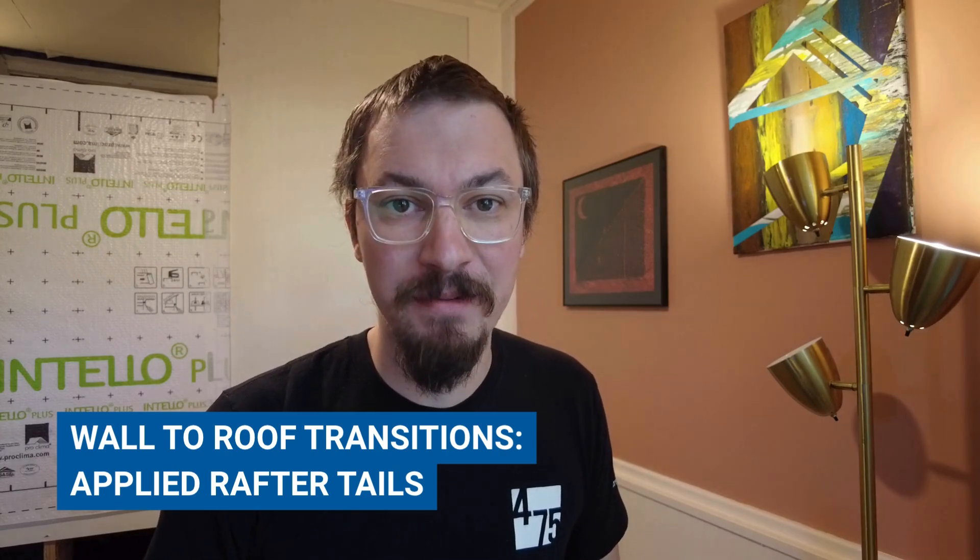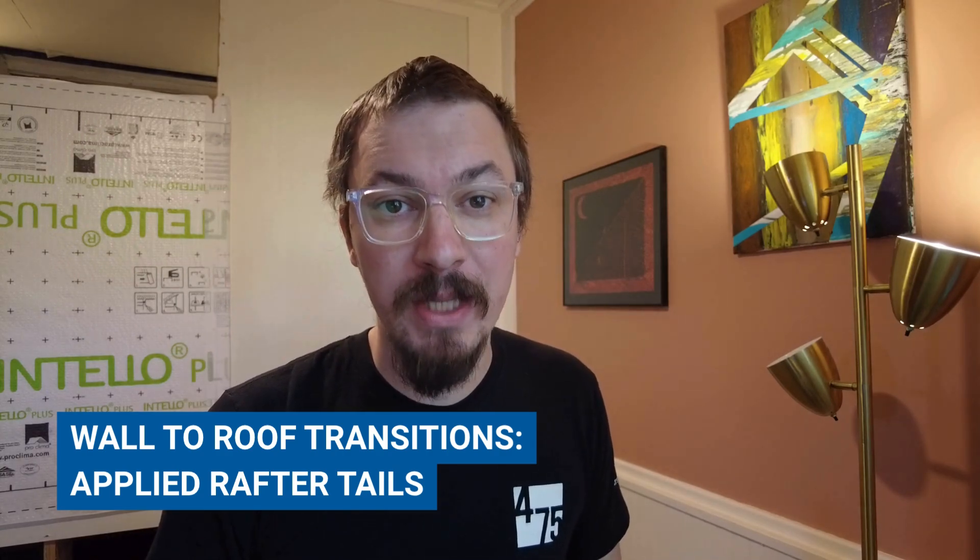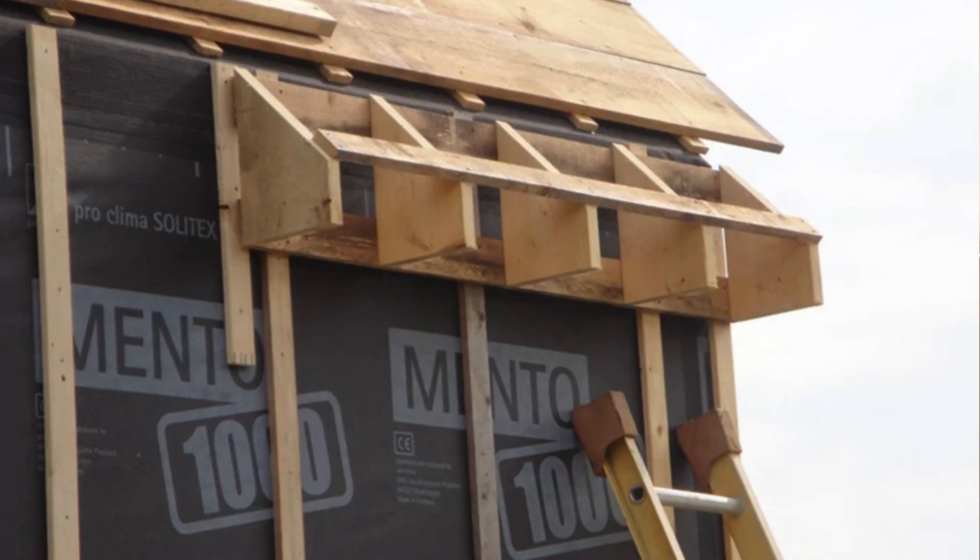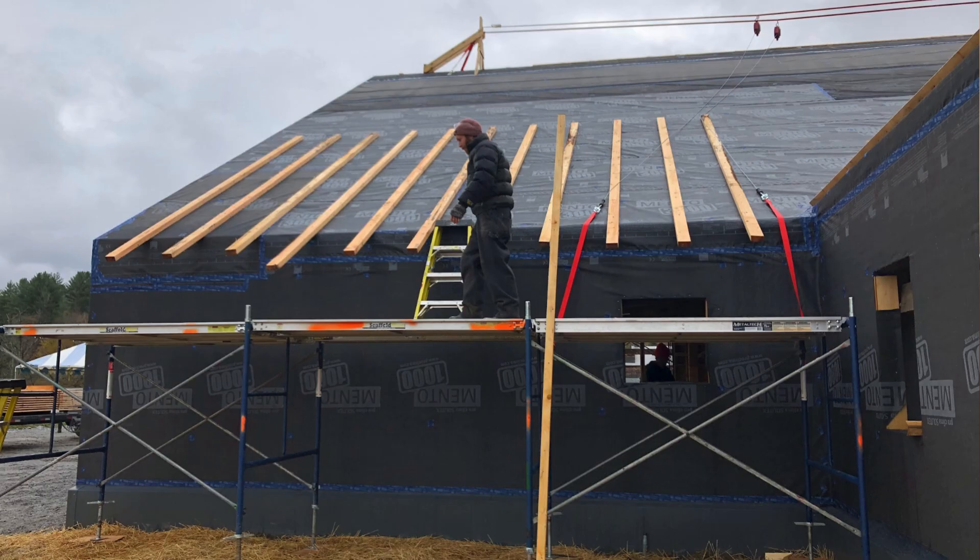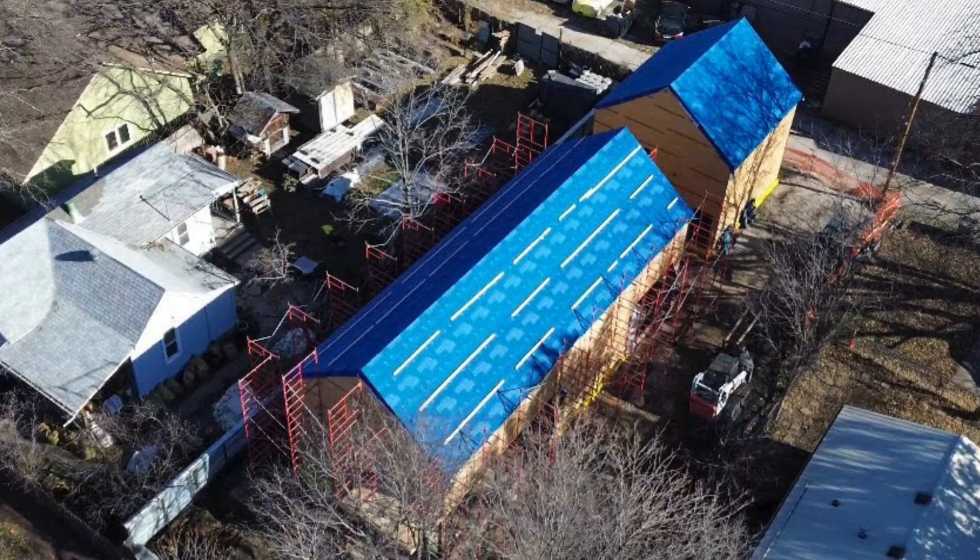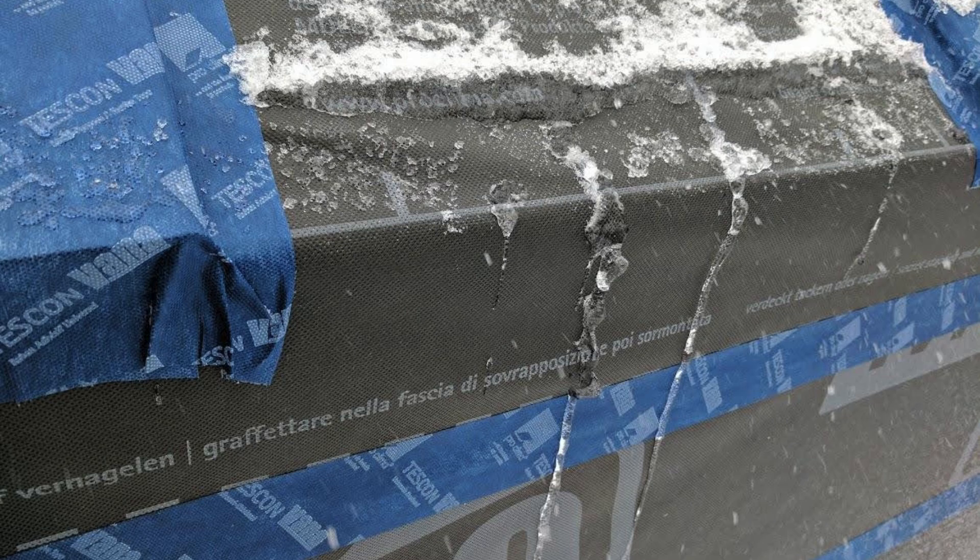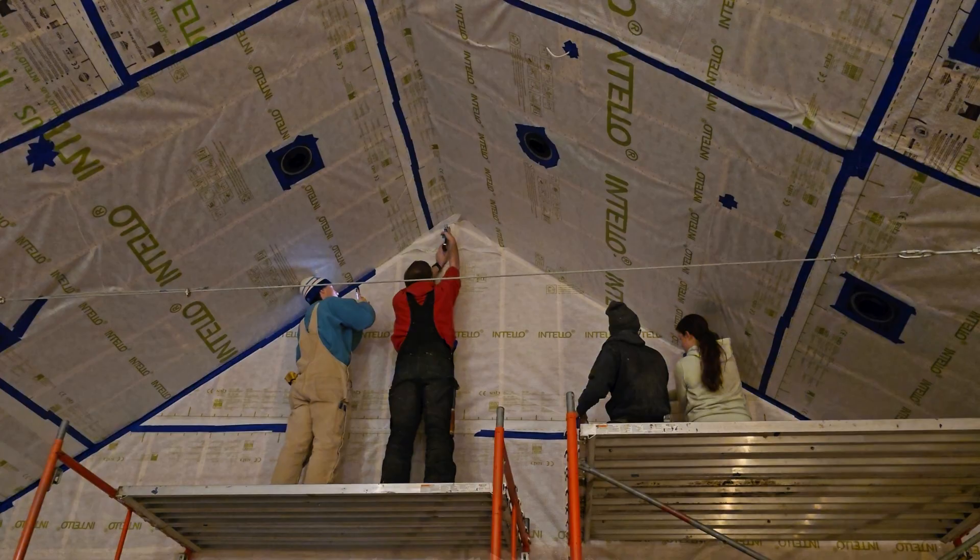Hi, I'm Nick Shaw with 475. We'll be looking at a section drawing of this applied rafter tail approach, this wall-to-roof transition, keeping a continuous exterior air barrier that's vapor permeable and watertight, while also keeping a complete and continuous interior air barrier that's airtight and vapor variable. Let's dive in.